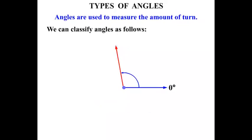If we keep turning now past the 90 degrees, we're into the field of obtuse angles. And these are between 90 degrees and 180 degrees. So all of those are examples of obtuse angles.